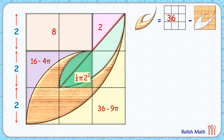The area of the triangle we subtract has base 2 and height 2, so it is half of base times height, giving 2 centimeter square. Therefore the area of this gray shaded region is π minus 2.